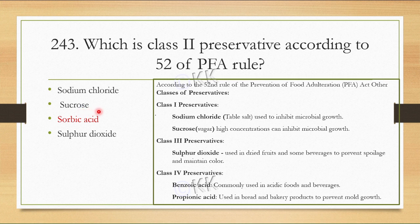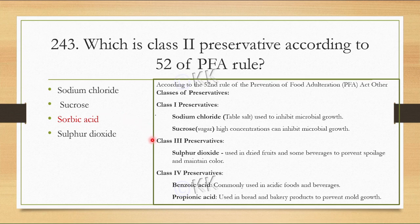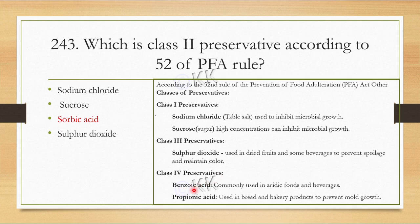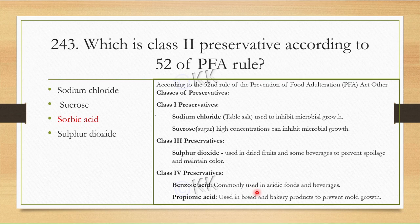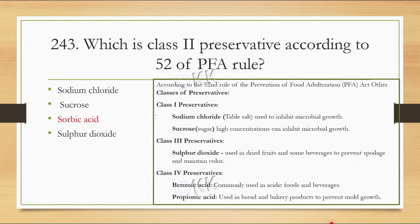Class 3 preservatives include sulfur dioxide, which we generally use to preserve dried fruits. Class 4 preservatives include benzoic acid and propionic acid. Benzoic acid is used to preserve foods and beverages. Propionic acid is used to preserve baked goods.